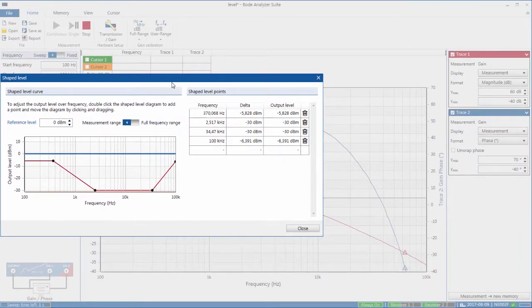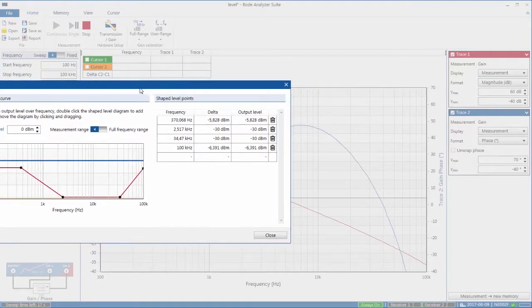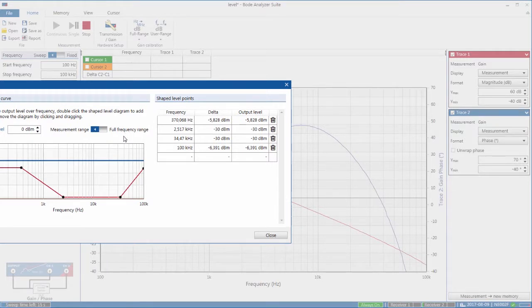Now one thing that would be interesting to see is what happens if we inject too large a signal. So I can add an extra point here and let's make it very big. This could be so big that it could even trip the current trip of the power supply.